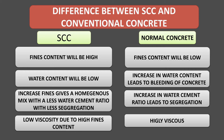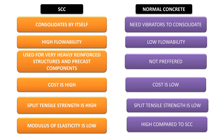In normal concrete, the water-cement ratio is higher. In SCC, it consolidates by itself, whereas normal concrete needs a vibrator to consolidate. SCC has high flowability, while normal concrete has very low flowability. SCC is used for heavily reinforced structures and precast components, where normal concrete is not preferred.